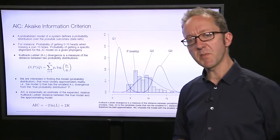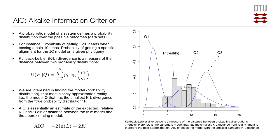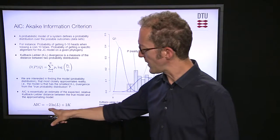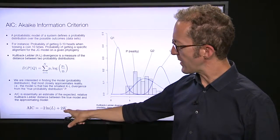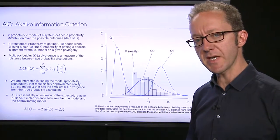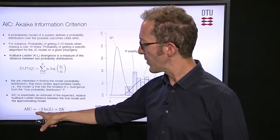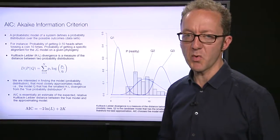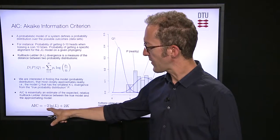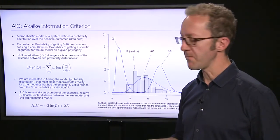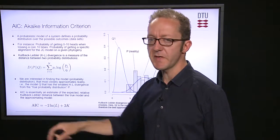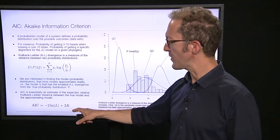As it turns out, that estimate is extremely simple to compute. The AIC for a given model is minus two times the logarithm of the likelihood of the fitted model — the maximum likelihood — plus two times the number of free parameters K. As K increases you get a larger AIC; as the log-likelihood increases you get a smaller AIC. So smaller AIC values are better: the larger the likelihood, the smaller the AIC; the smaller the number of parameters, the smaller the AIC.